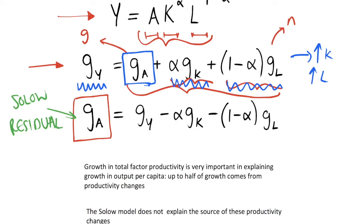This is all picked up by the Solow residual, and a lot of research has gone into this. As I have written down, we see that the growth in total factor productivity, or TFP, which we can talk about as the growth in A, is very important in explaining our growth in output per capita.